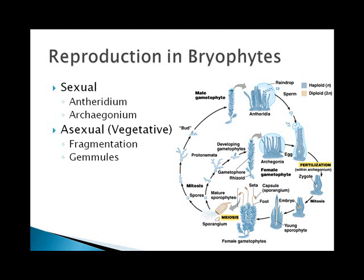If they reproduce asexually, they reproduce in two ways: by fragmentation and by producing gemmules. Fragmentation means that they break apart and start a new plant. A widespread means of asexual reproduction in both liverworts and mosses is the production of gemmules, or gemmi. These are multicellular bodies that can give rise to new plants.